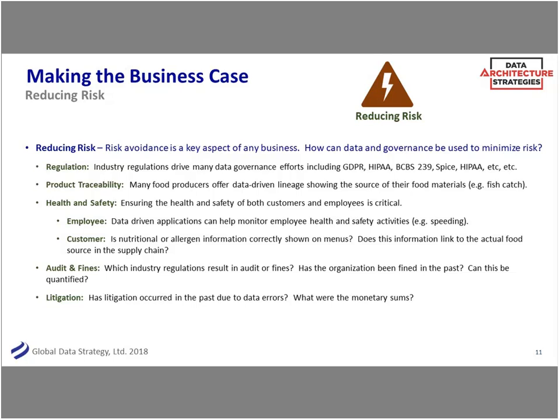A restaurant chain I worked with had to put nutritional information and allergen data on menus due to federal requirements. If I'm allergic to nuts and the menu didn't disclose that, there's a lawsuit. If it's labeled as vegan but has meat, same problem. They had to track each supply chain food item — where it came from and what the nutritional content was. That was a big risk for them. Were there fines that already happened? Often that's what sells the project. 'Remember that $50,000 fine last year? We don't want that to happen again.'